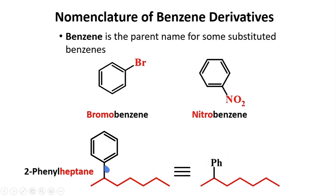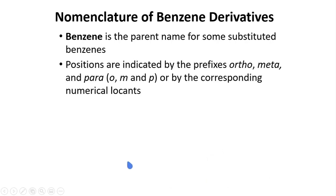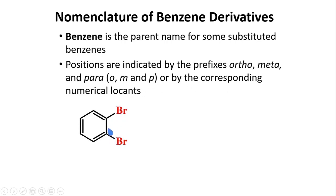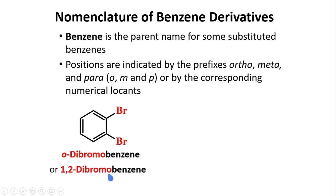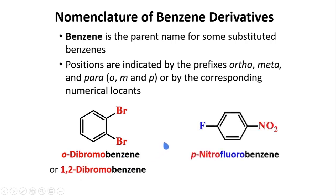Positions are indicated by the prefixes ortho, meta, and para — or o, m, and p — or by the corresponding numerical locants. In this compound, two bromine atoms are attached to carbons right next to each other in the benzene ring. This is the 1,2 position, so they are considered ortho to each other.